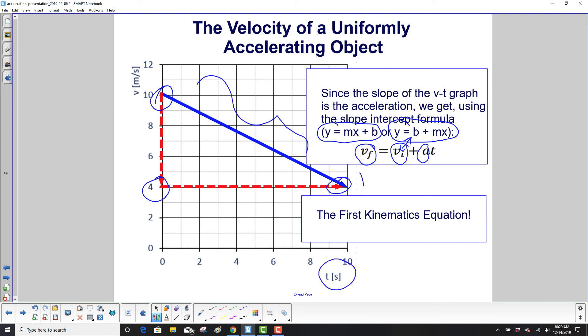So we have vf equals vi plus at represented on this graph. And that's the first kinematics equation.